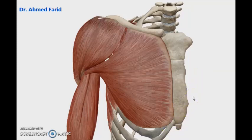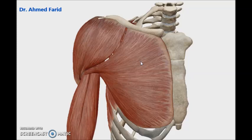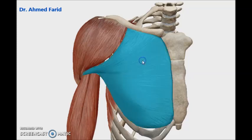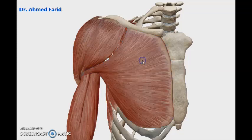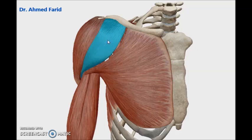Welcome, dear students. In this video we will discuss the origin, insertion, and actions of the muscles of the pectoral region. We want to be oriented by the muscles present in this view. First of all, this is the pectoralis major muscle. The lateral border of pectoralis major is related to the deltoid muscle.